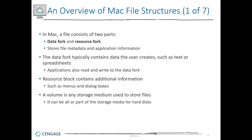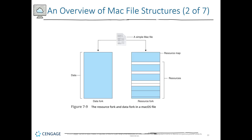The data fork typically holds data that the user creates — text documents, spreadsheets, PDFs, and so forth. Applications also read and write into the data forks, while resource forks contain information such as menus and dialog boxes — so more of the application-specific items are focused in the resource fork. User-generated file content is in the data fork. Each individual file will have both a data fork and a resource fork, so all menu options and dialog sections are part of the resource fork, while the data the end user interacts with is in the data fork.